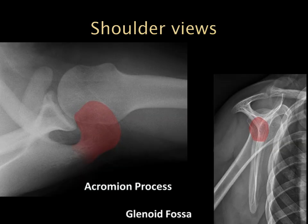Moving down to the shoulder, I want to highlight two views that might be a little confusing. The first is the axillary view, which gives us a good view of the glenohumeral joint, and also highlighted in red is the acromion — this view always gives us a good look at the acromion. The other view is the transcapular view, where we see a lot of overlap of different structures. Highlighted in red is the glenoid fossa, and when we're looking for dislocation, how does the humeral head relate to that glenoid fossa?